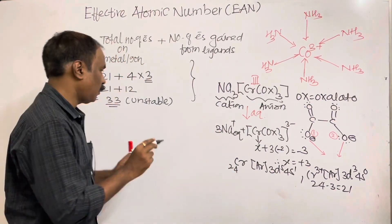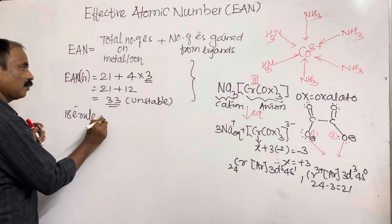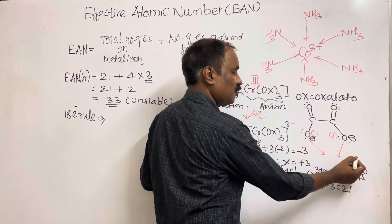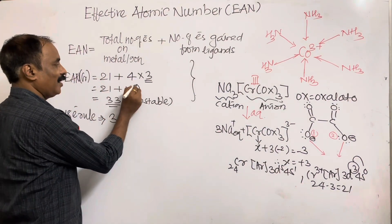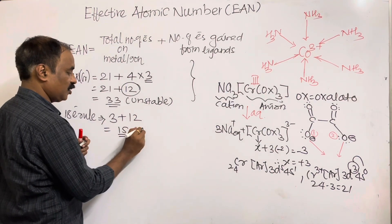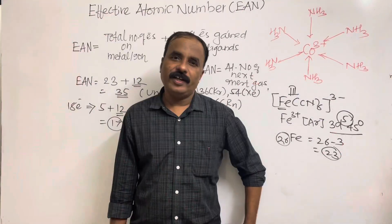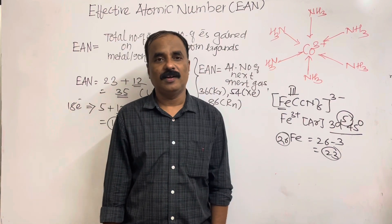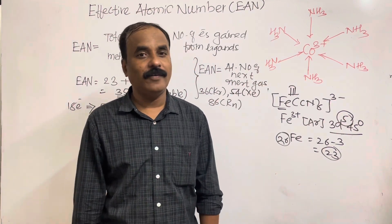Using the 18-electron rule for the same complex: Cr³⁺ has 3 valence electrons (3d³ + 4s⁰). Number of electrons gained from ligands = 12. So 3 + 12 = 15, not 18 — unstable. By using both the EAN rule and the 18-electron rule, we can determine whether a complex is stable or unstable. If you have any doubts, put them in the comment box and I will get back to you. Thank you.